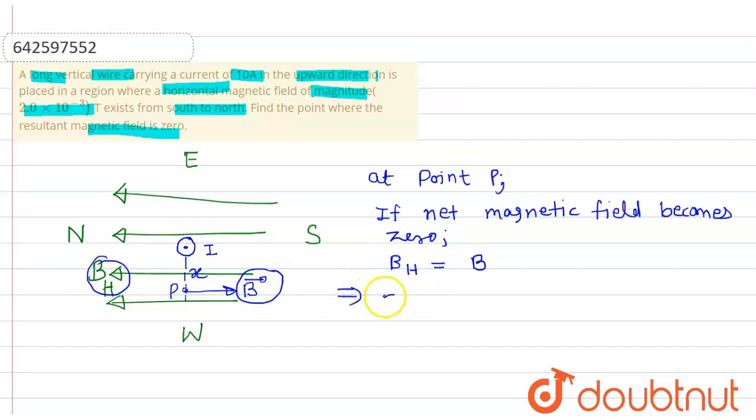So BH is given as 2×10⁻³ and magnetic field B can be written as μ₀i/2πx. This is the magnetic field due to long wire or infinite wire. So this will be equals to μ₀i/2πx and we have to find the value of x.